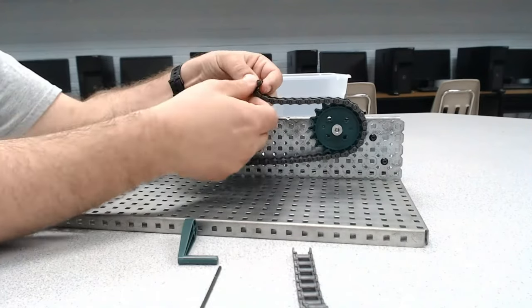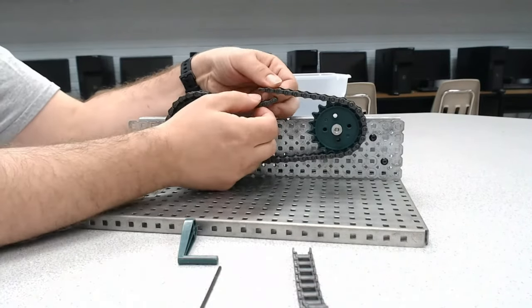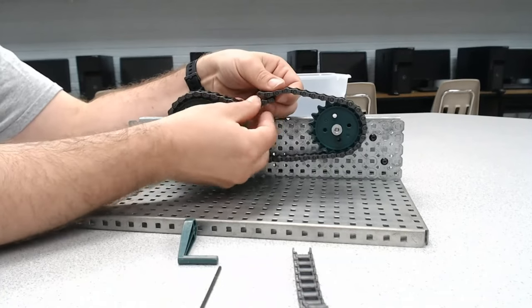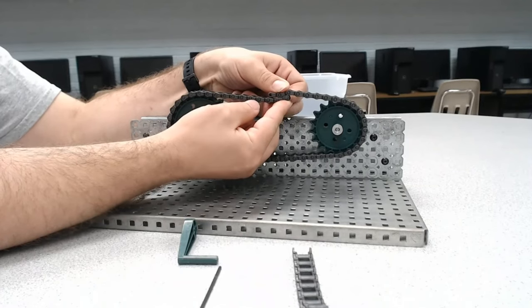So instead, what I tend to do is I tend to look for one chain link of overlap. And if we look carefully, we actually see I'm overlapping two. I'm going to very carefully take one off.